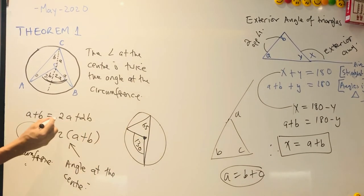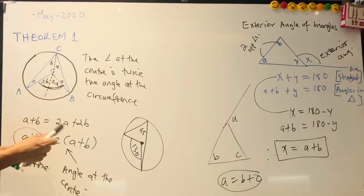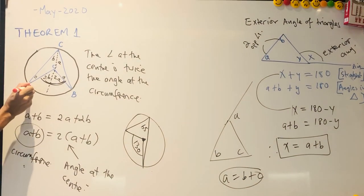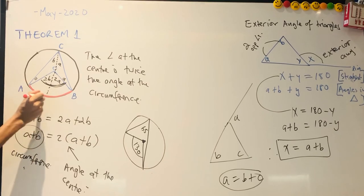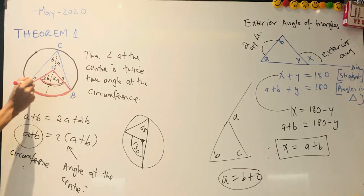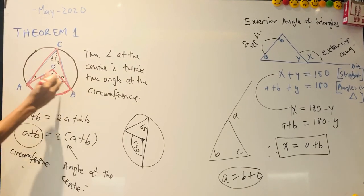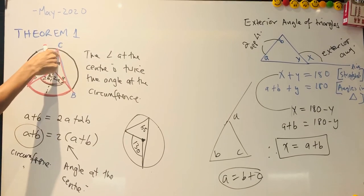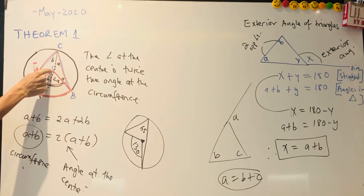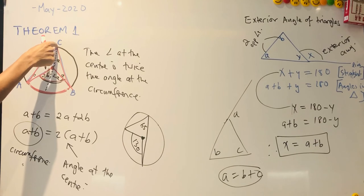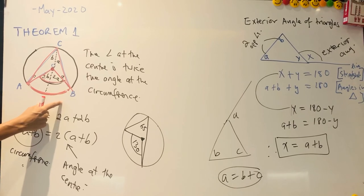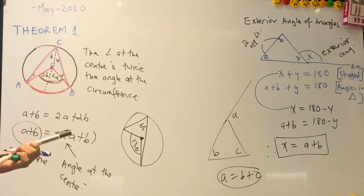Look at something important for Theorem 1: this arc here makes the angle at the center, and it also makes the angle at the circumference. They are both suspended from the same arc. So the rule applies as long as one angle is at the center, the other is at the circumference, and they are both suspended by the same arc. There are a lot of examples to practice.